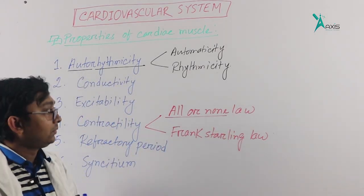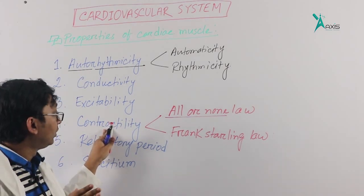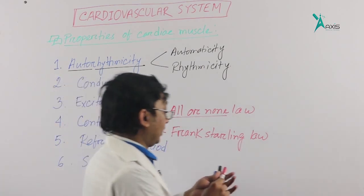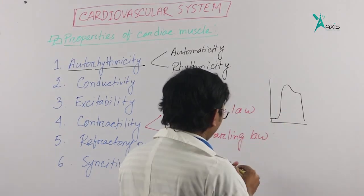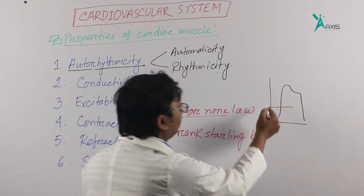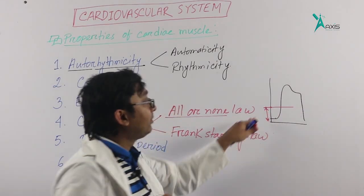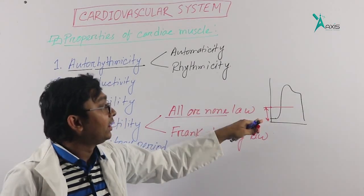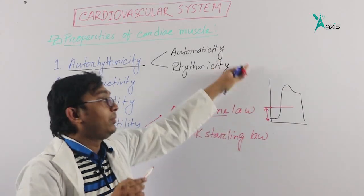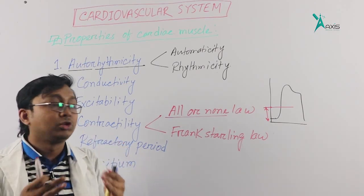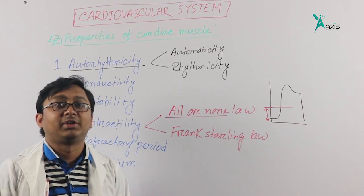The All-or-None law states that once an action potential is produced and the stimulus reaches the threshold level, the muscle will contract. If any impulse reaches above the threshold level, action potential will be generated. If any impulse comes below the threshold, it cannot produce an action potential. This is the All-or-None law.